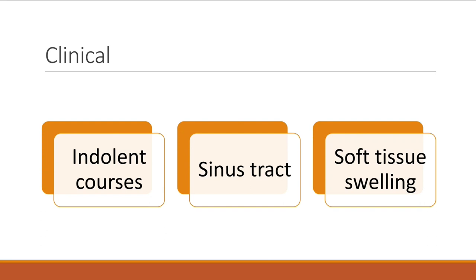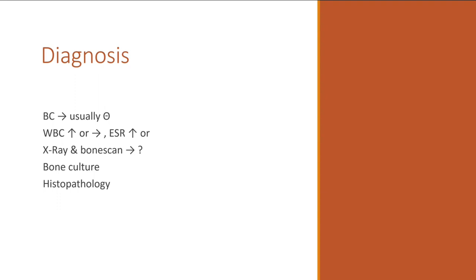Every time you have a sinus tract, make sure there is no chronic osteomyelitis underneath. It can be hard to distinguish, especially in the lower extremities, where the leg may be swollen, red with cellulitis, and have a localized draining area. In chronic osteo, blood tests are not very helpful — the white count may be slightly elevated but usually isn't. ESR and CRP may not be markedly elevated either. X-rays and bone scans can help, but examining the patient directly is often most informative.